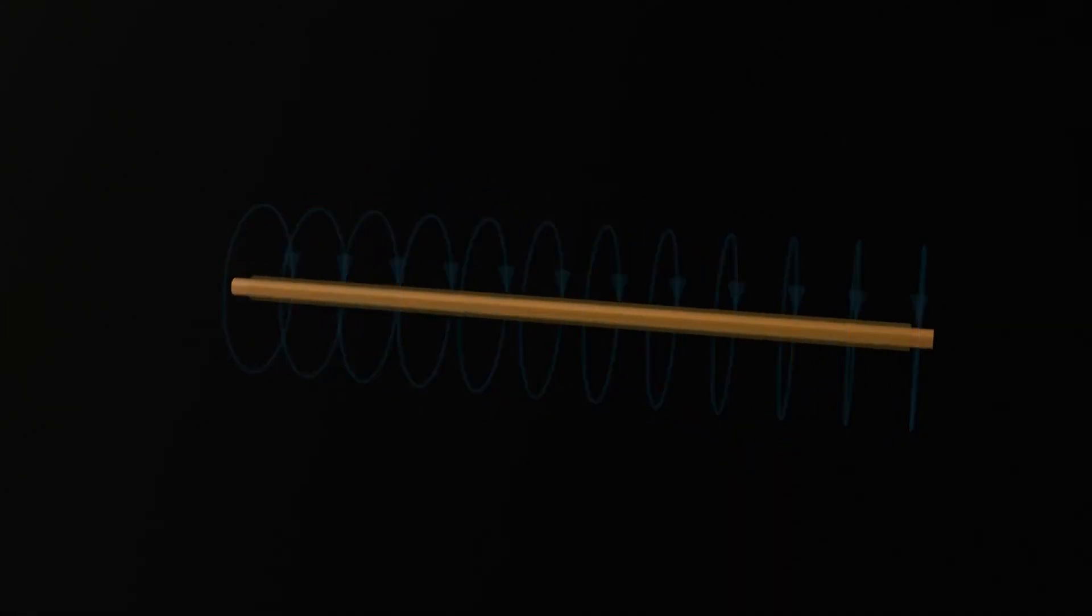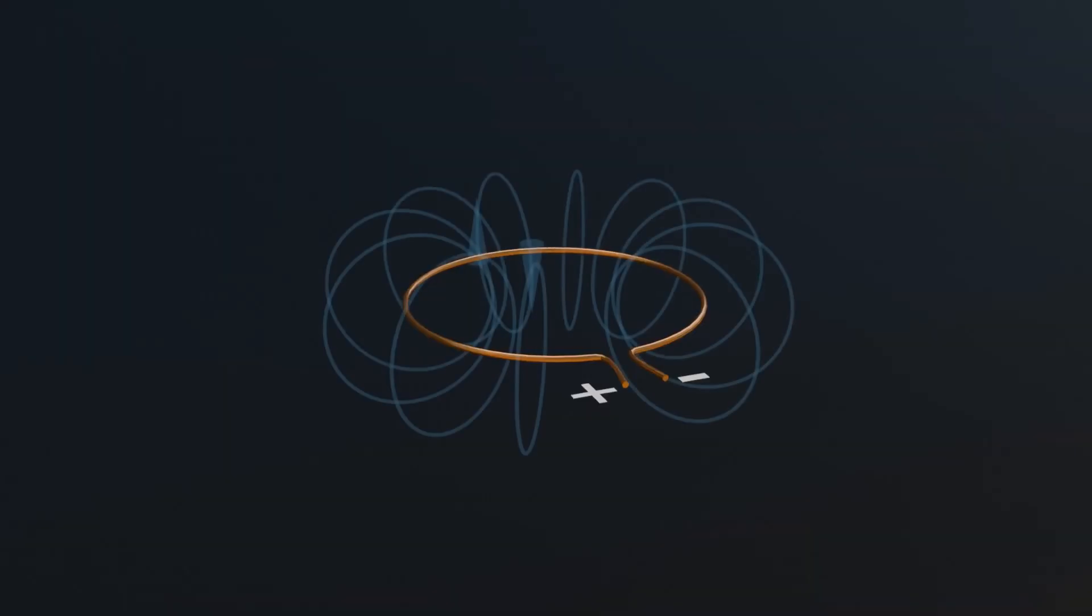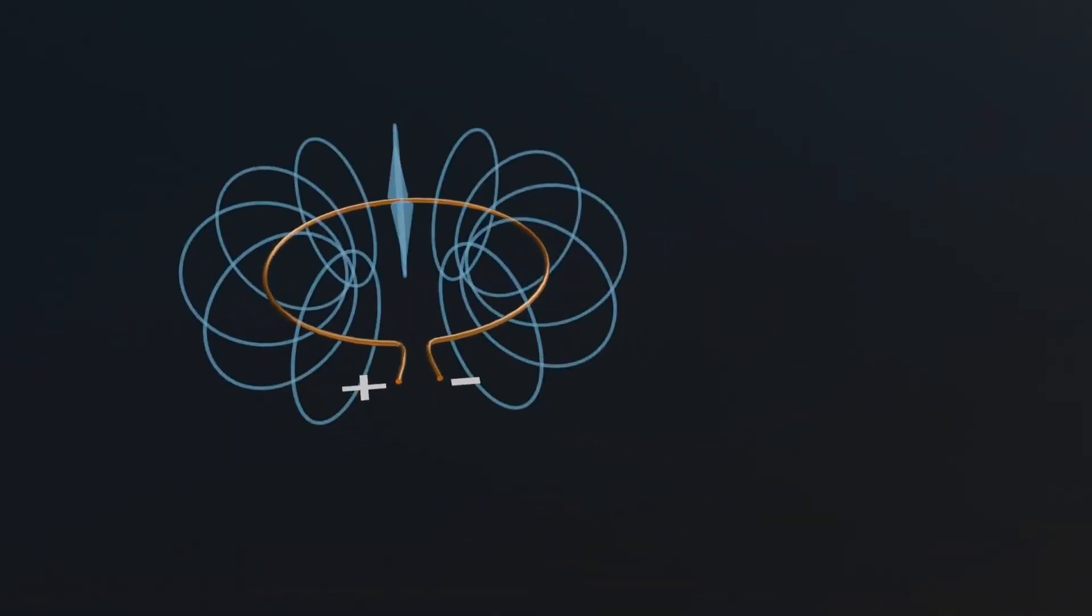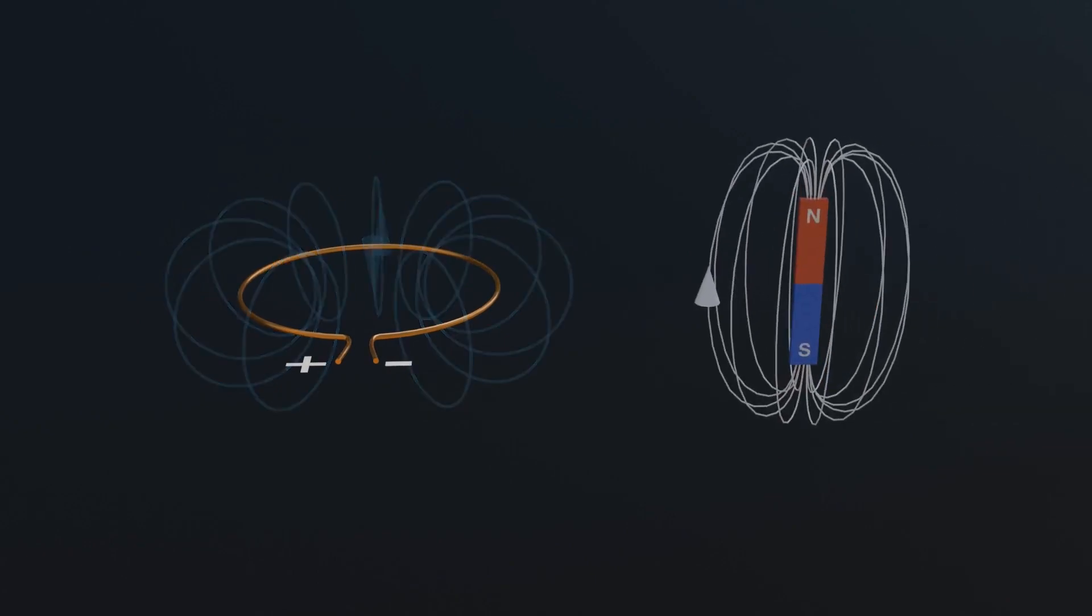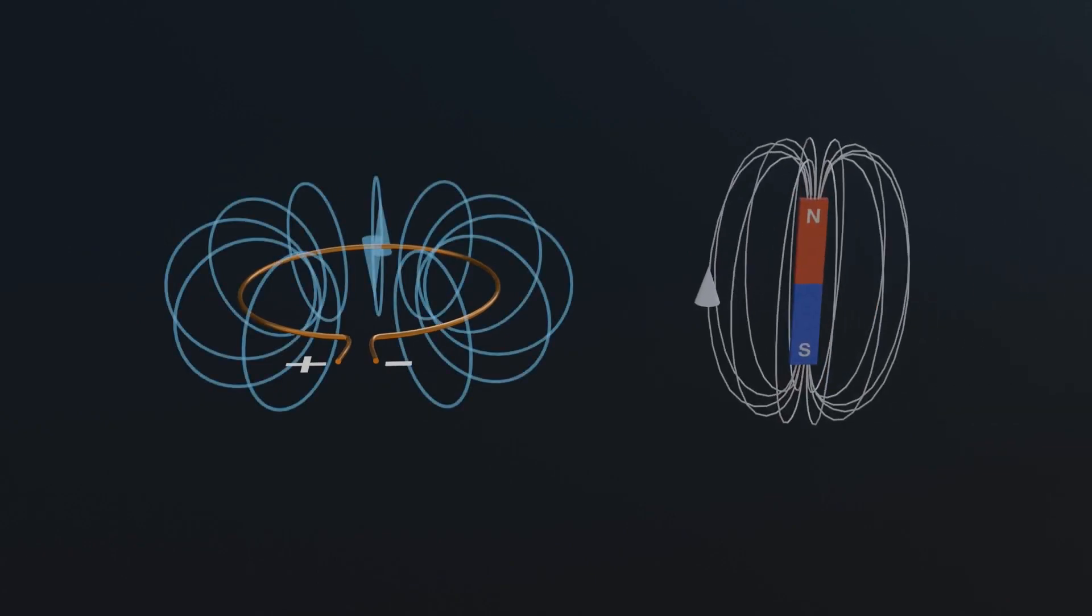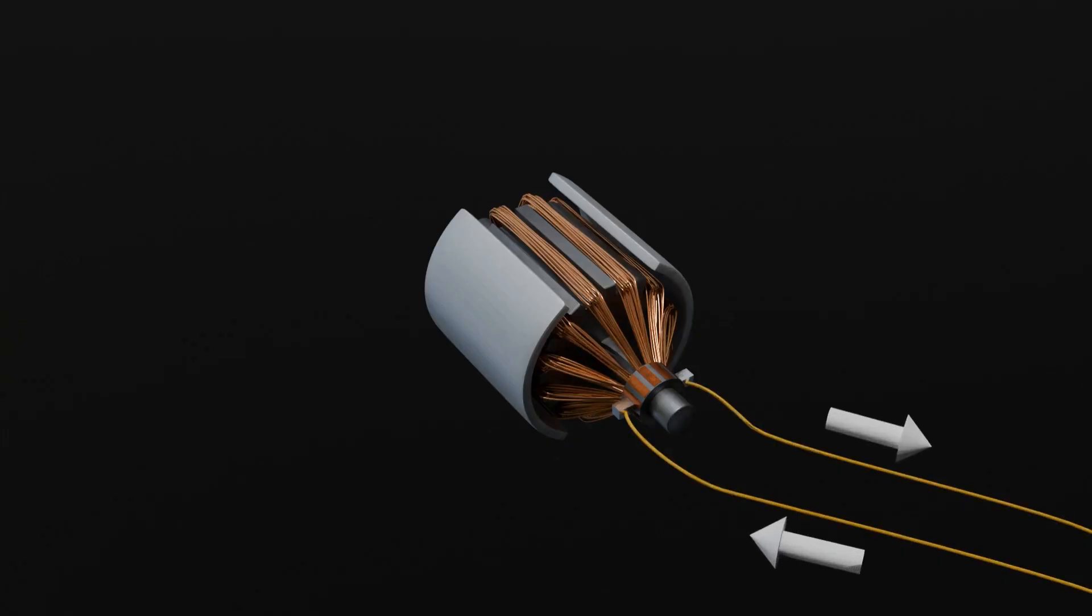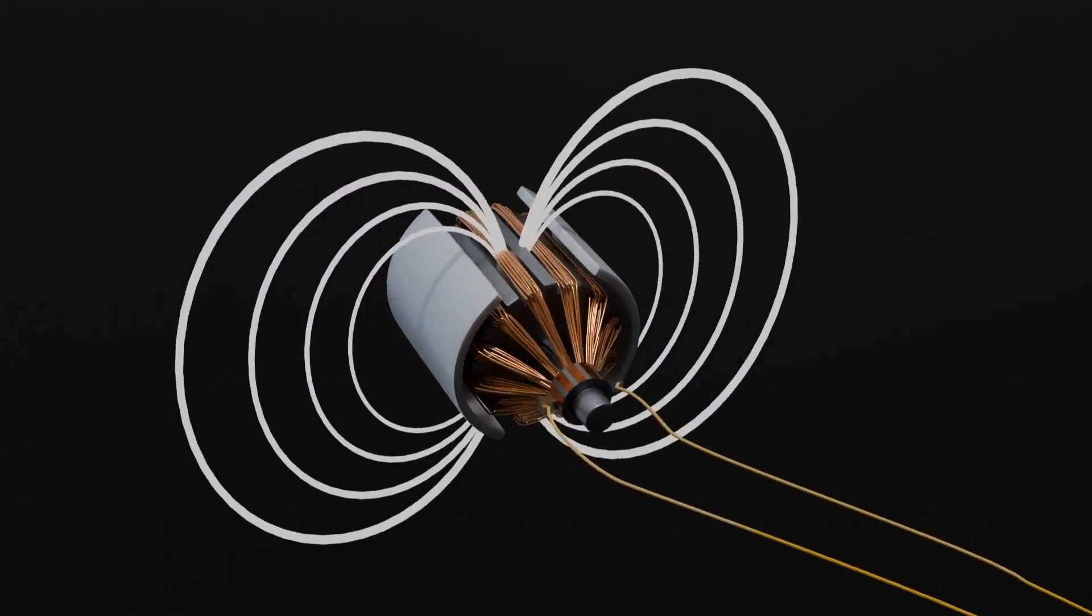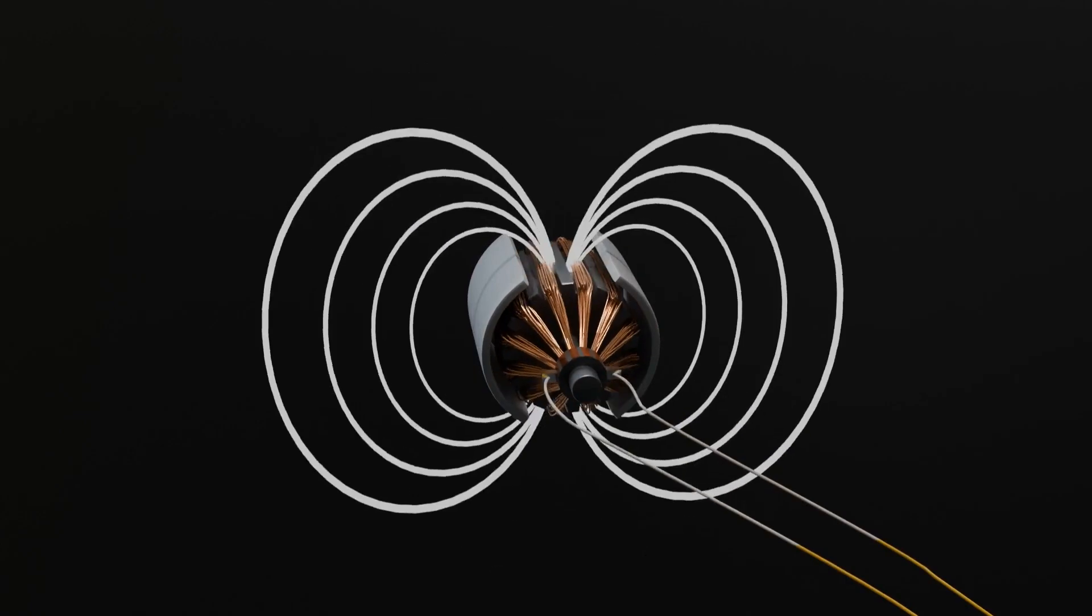When an electric current flows through a wire, it creates a magnetic field around it. Something like this. Now, if we shape that wire into a loop, the magnetic field wraps around in a specific pattern, forming poles just like a magnet. So in short, a current carrying wire behaves like a magnet. And this simple fact is the foundation of how electric motors work. They harness this magnetic force to create motion.